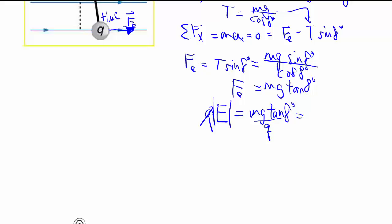Subbing all numbers, what are we given? We're given mass as 5 grams, so let's change that to kilograms, times 9.8 meters per second squared for my G, tangent 8 degrees, all divided by 1 microcoulomb, so 10 to the minus 6 coulombs.